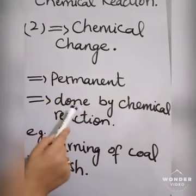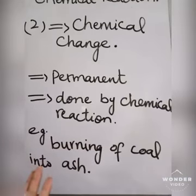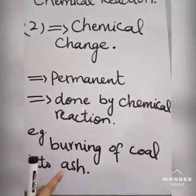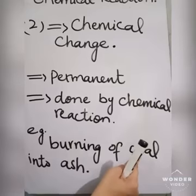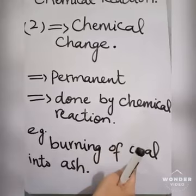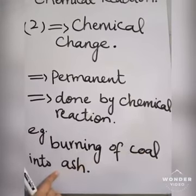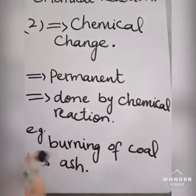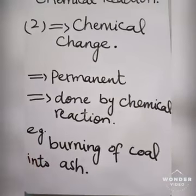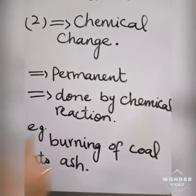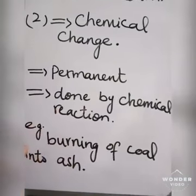Chemical change is permanent because it is caused by a chemical reaction. For example, burning of coal into ash — when we burn coal, it changes into ash. Can this ash be converted back into coal? No, we cannot convert this ash back into coal, because coal and ash have different chemical properties. So chemical changes cannot be reversed; they are permanent changes involving a chemical reaction.